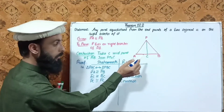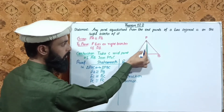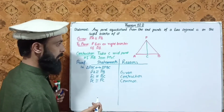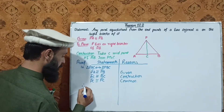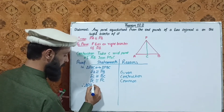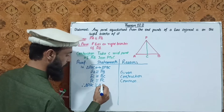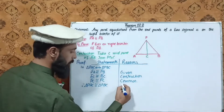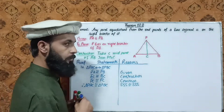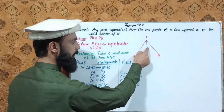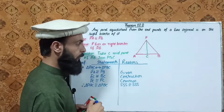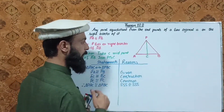Since triangle PAC is congruent to triangle PBC by side-side-side congruency, the corresponding angles are equal. So angle 1 is congruent to angle 2.